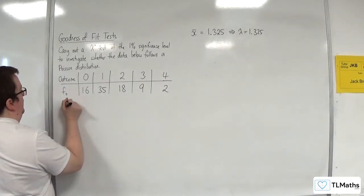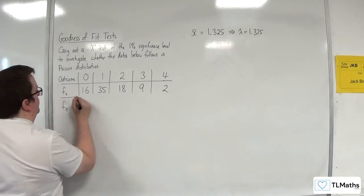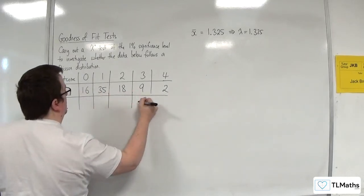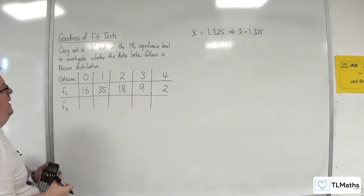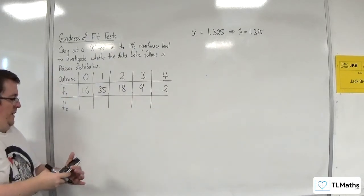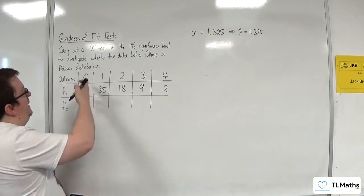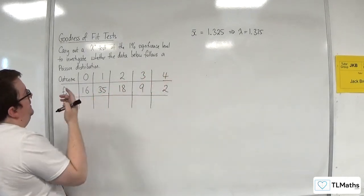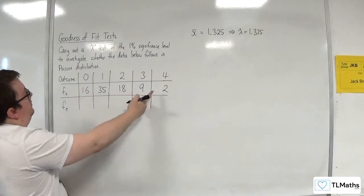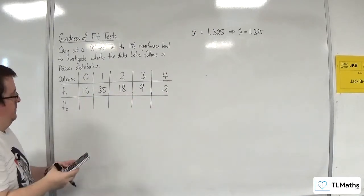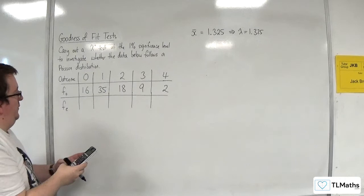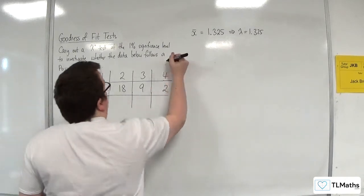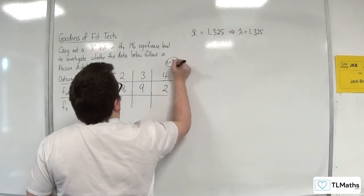So here are my observed frequencies. I now need my expected frequencies. The expected frequency is going to be the probability of x being equal to 0, with a Poisson distribution with lambda as 1.325, times by the total number that I have here. The total is 16 plus 35 plus 18 plus 9 plus 2, so 80. So n is 80.